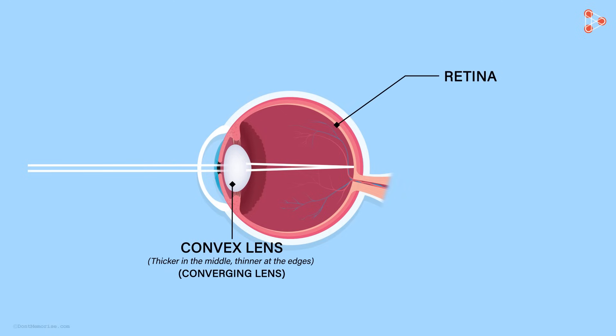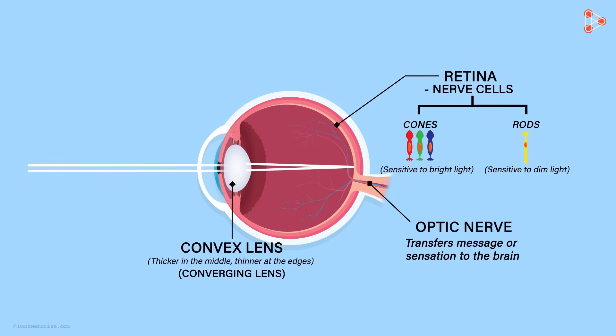Retina is at the back of the eye and marks the inner layer of the eyeball. Retina contains lots of nerve cells that sense the light. The nerve cells are of two kinds: cones which are sensitive to bright light, and rods which are sensitive to dim light. The message or sensation is then transferred to the brain along the optic nerve.